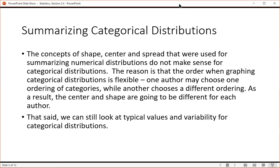The concepts of shape, center, and spread that we used for summarizing numerical distributions do not make sense for categorical distributions. The reason is that the order when graphing categorical distributions is flexible. One author may choose one ordering of categories, while another chooses a different ordering.